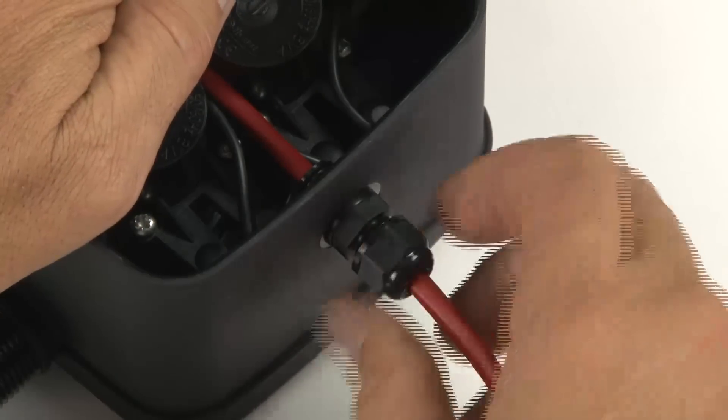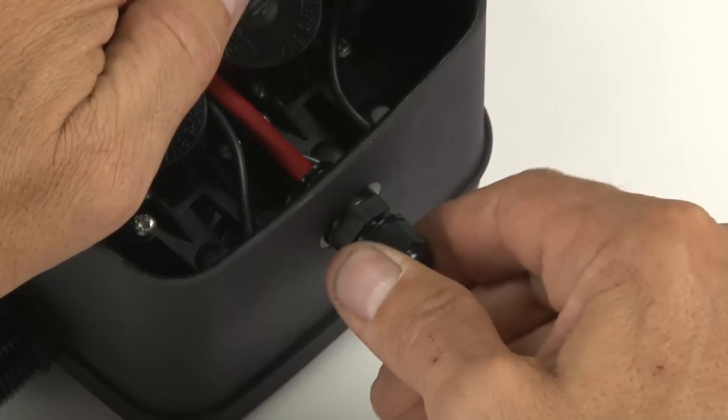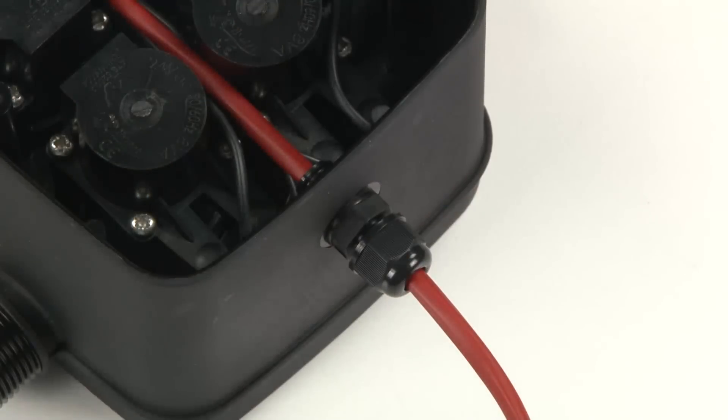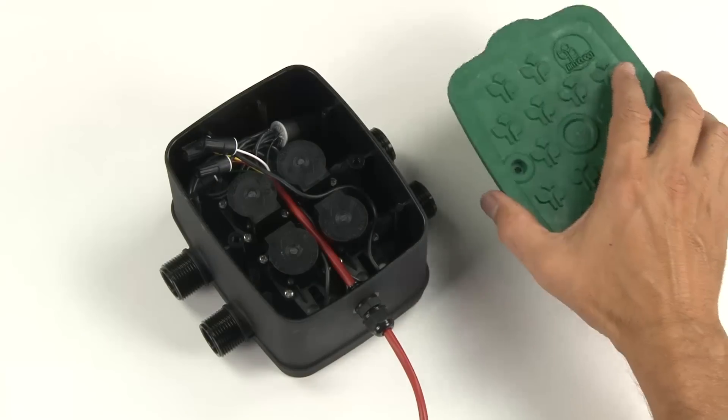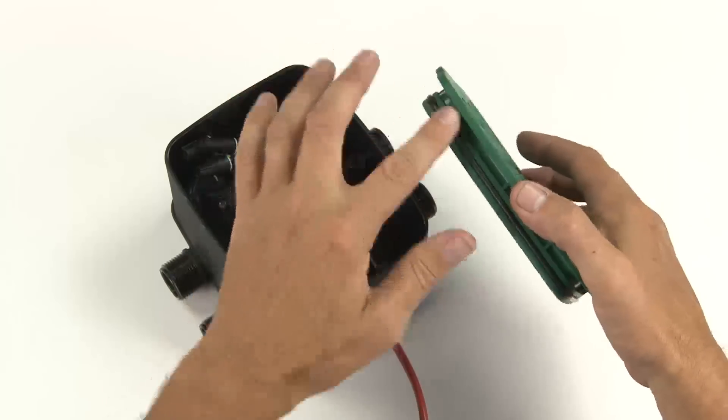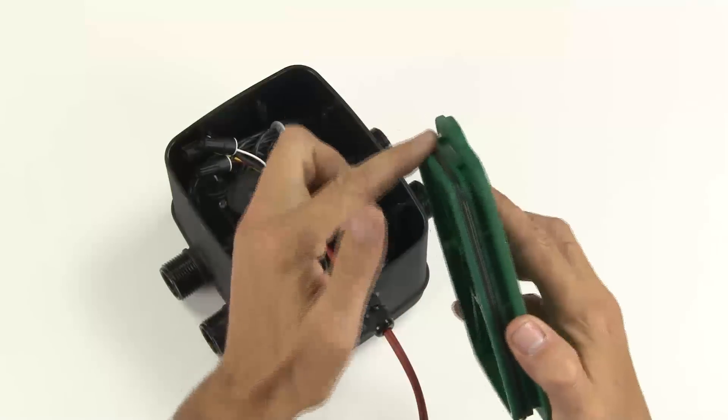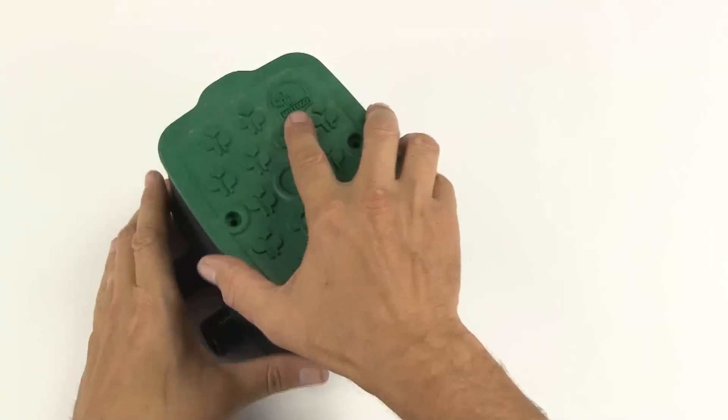Tighten the sealing nut on the outside of the box so it clamps down on the cable to provide a waterproof seal. Take your lid, making sure the o-ring is clean, then push it down onto the box.